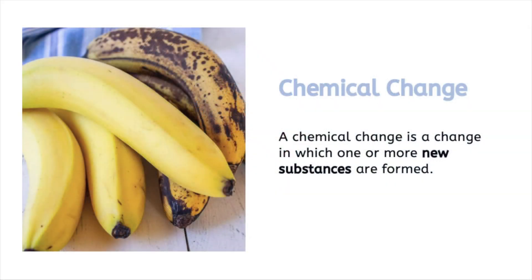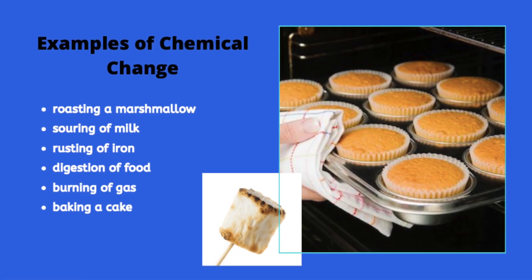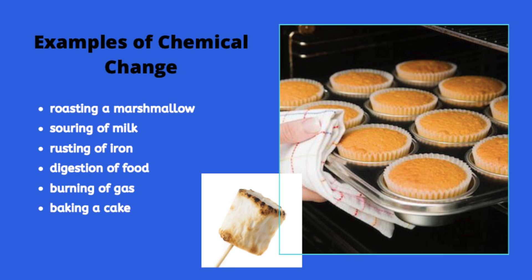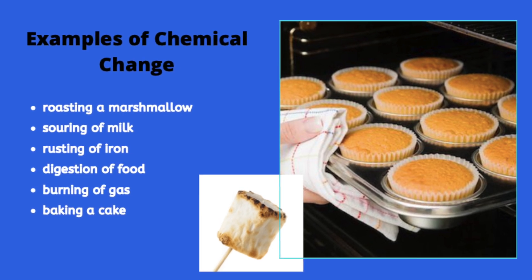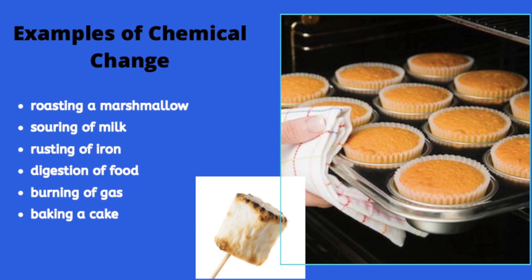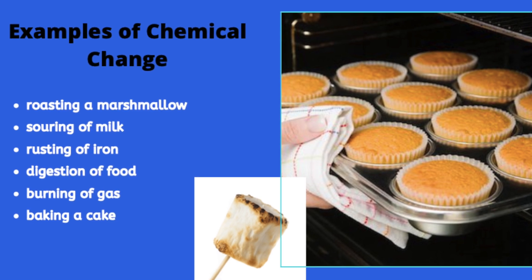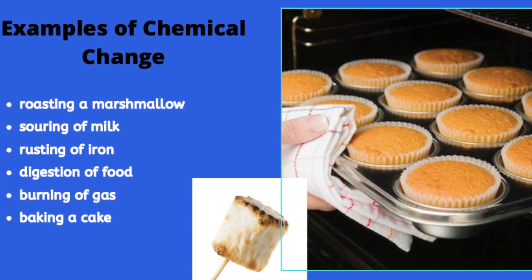A chemical change is a change in which one or more new substances are formed. Roasting a marshmallow, souring of milk, iron rusting, digestion of food, burning of gasoline, and baking a cake are all examples of a chemical change.